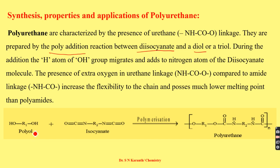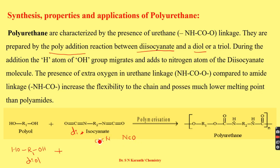A diol is generally represented as HO-R1-OH, with two OH groups. This diol is made to react with a diisocyanate, where the NCO group is the isocyanate group. When two NCO molecules are linked by an alkyl group, it is called a diisocyanate, structurally represented as O=C=N-R-N=C=O. This undergoes a poly addition reaction.